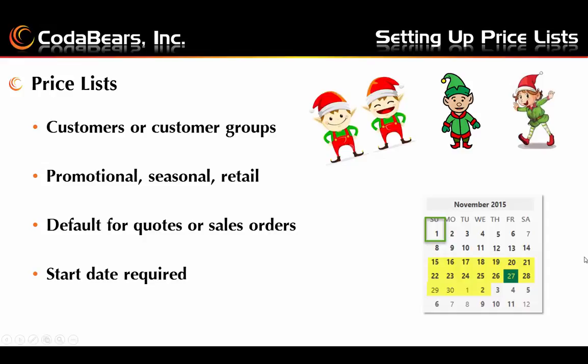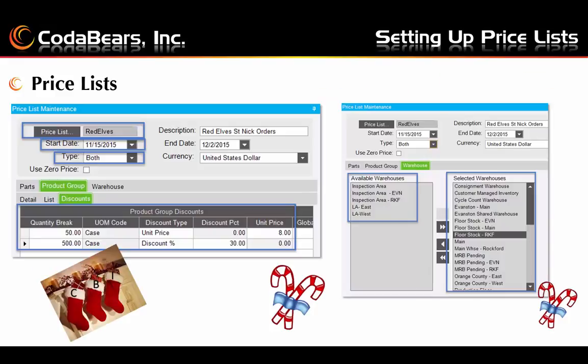Once the price lists are fully set up, they will be the default pricing for quotes and sales orders. All price lists require a start date, but they do not require an end date. Here we show our example of a price list: we set up the pricing for the red elves for the St. Nick's orders. Notice the start date is selected and the end date can be selected but does not need to be. The type shows 'both,' which allows unit price or discount percent to be entered, and we have an example of each shown here.